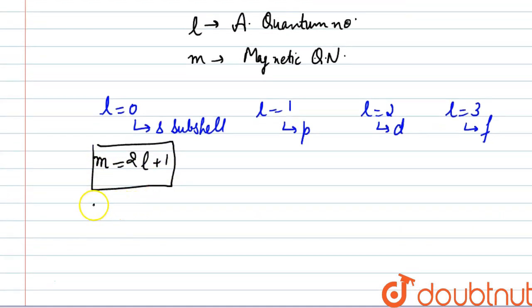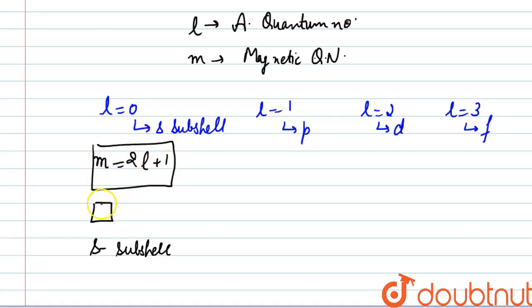For the S subshell, the value of L is equal to zero. When we put this in 2L+1, we get M equal to 1, meaning we have one orbital. This one orbital is written as zero.